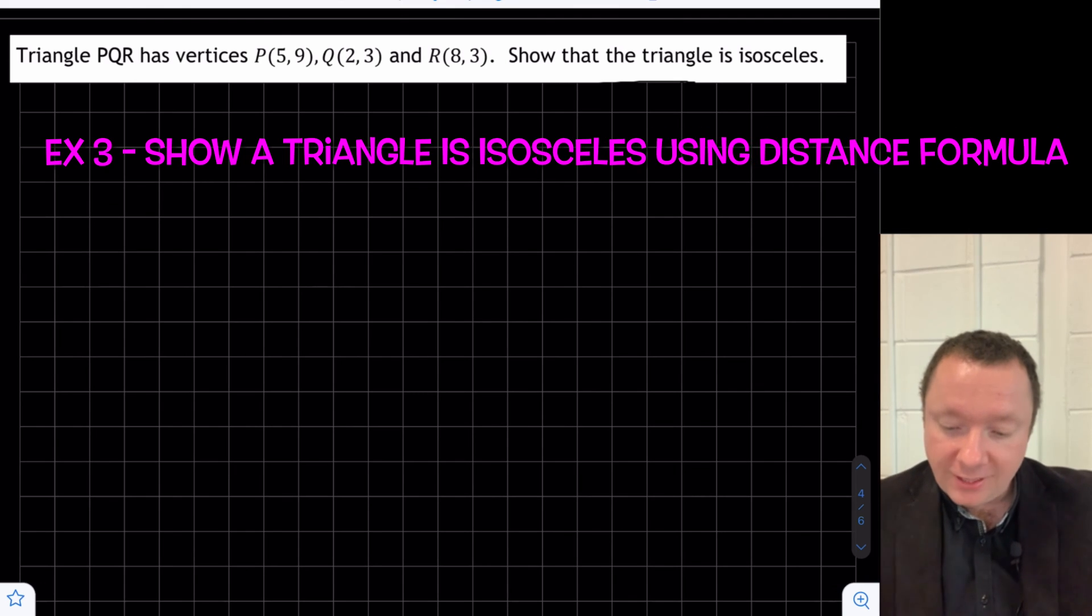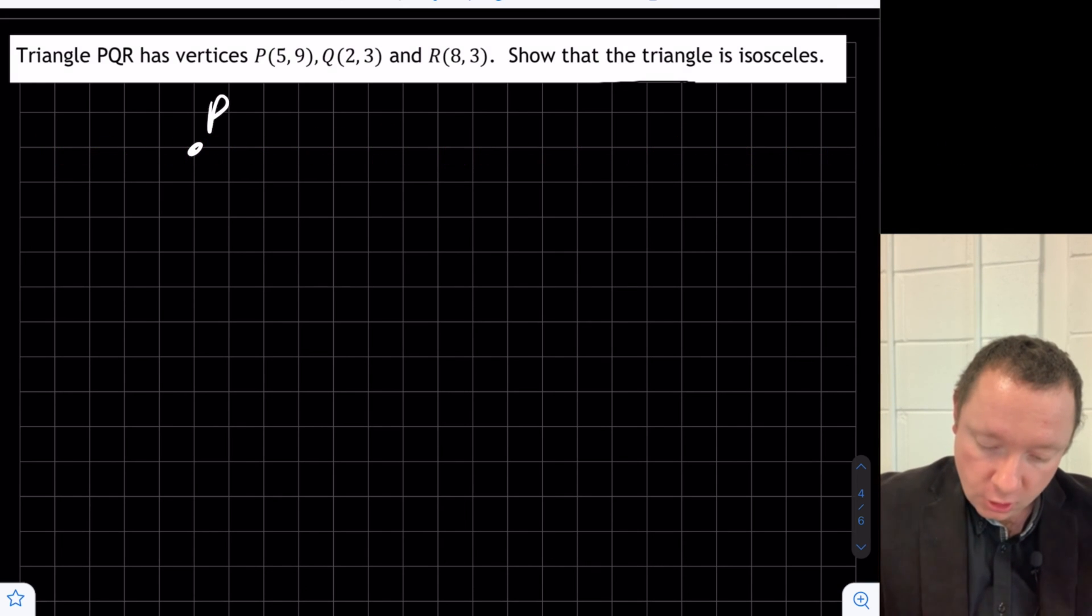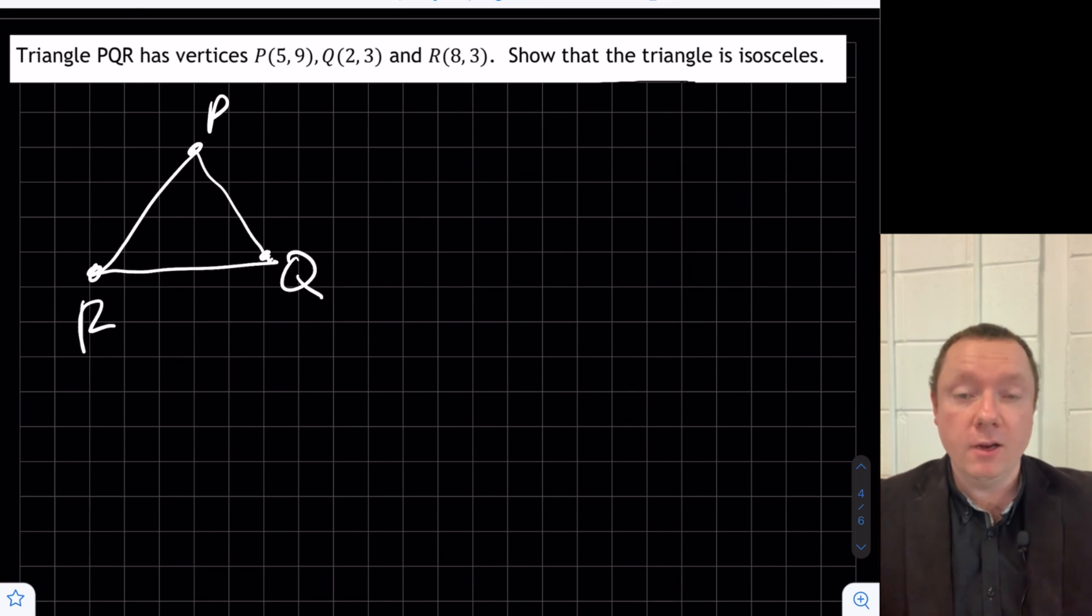Triangle PQR has these vertices, show that it's isosceles. So we can visualize P, Q, and R. And of course, this is not drawn accurately at all. I'm not even checking to see if the relative relationships with where the points would be is correct. It's just to give me an idea. But essentially, if two of these sides are the same, any two of the sides, it is an isosceles triangle. So I just need to check my distances.